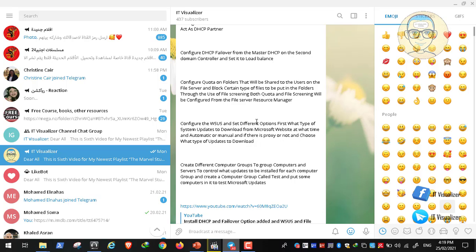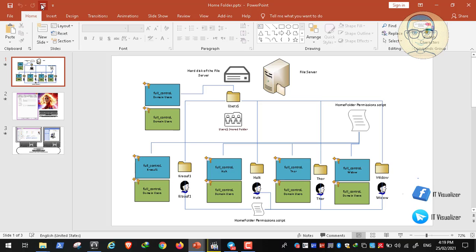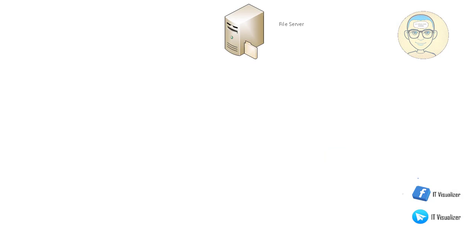In this video, we will begin configuring Active Directory home directories, also called Active Directory user home folders. To explain the concept: you have a file server with a hard disk, and on it there will be a main folder called 'users'. All Active Directory user home folders will be created inside it. Every user in the Active Directory will have a subfolder — named according to their AD username — where they can store their personal data.